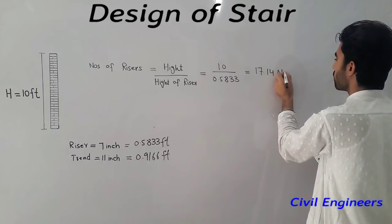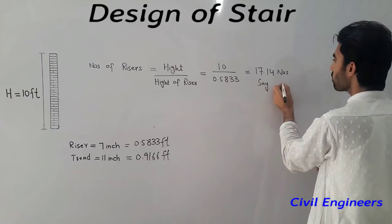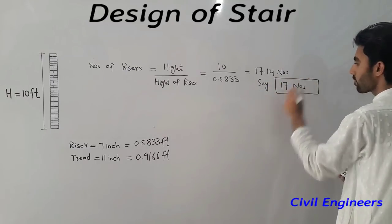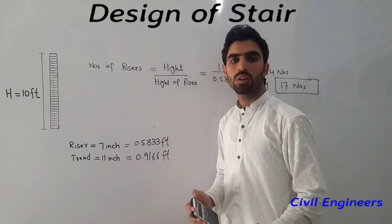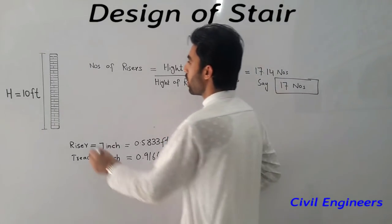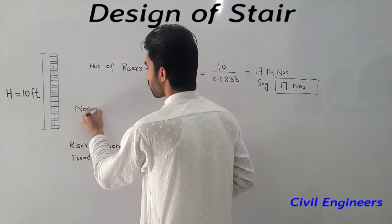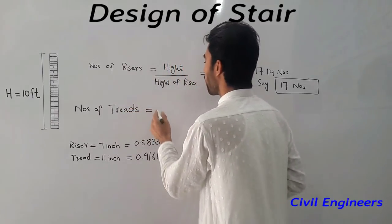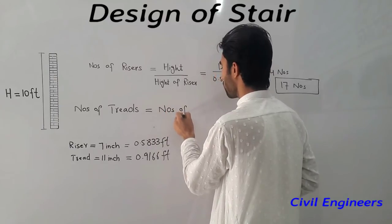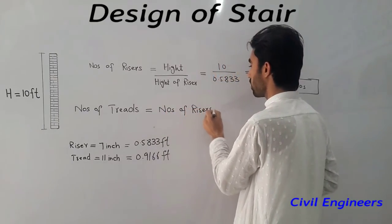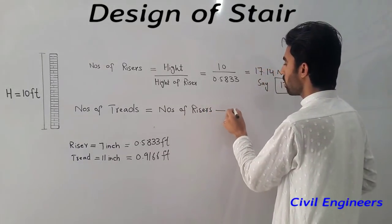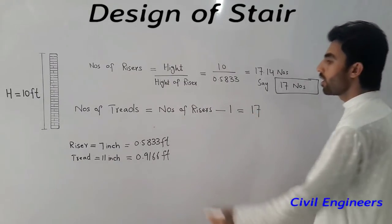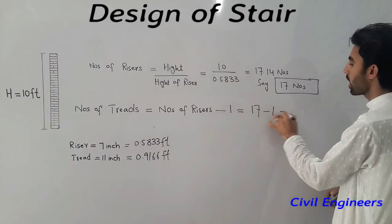Now I will find out number of treads. Number of treads equals number of risers subtract 1. So it will come here 17 subtract 1, so it will come 16 numbers. So this is the formula to find out the risers and treads.